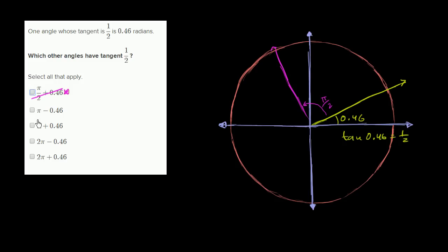They don't have the same slope. Now let's think about π minus 0.46. π is going halfway around to the negative x-axis, but then we're going to subtract 0.46. So it's going to look something like this, where this is 0.46 that we have subtracted.